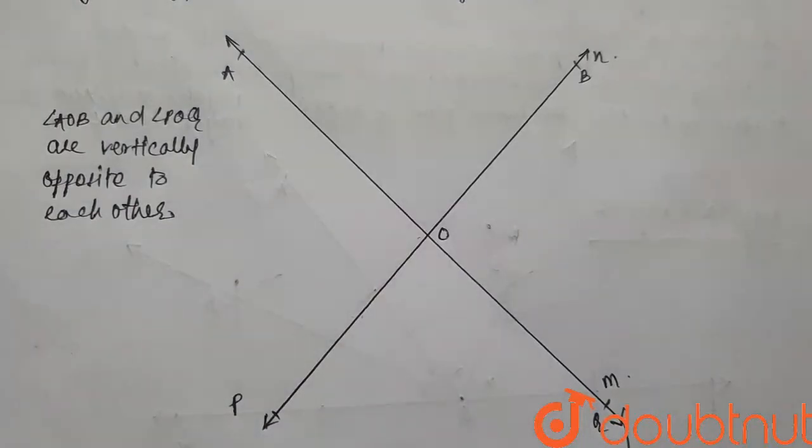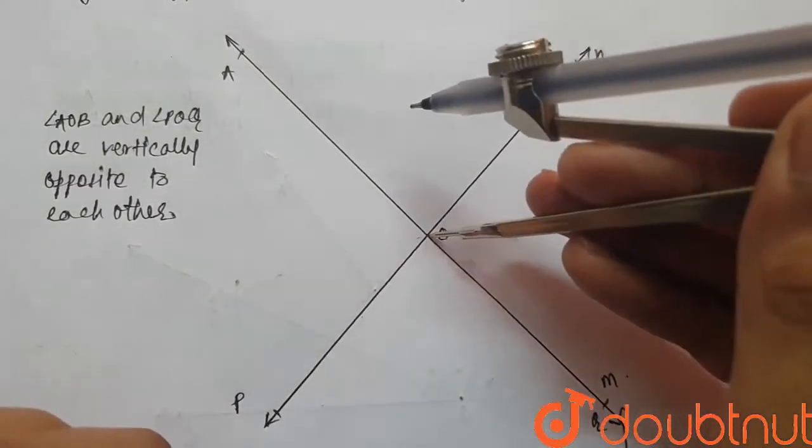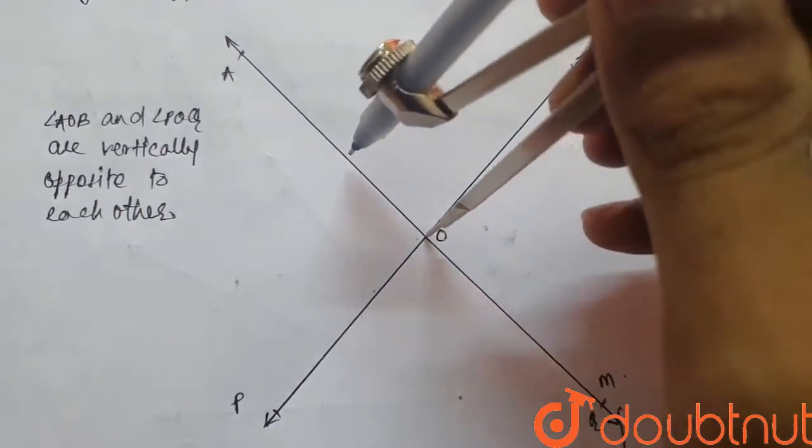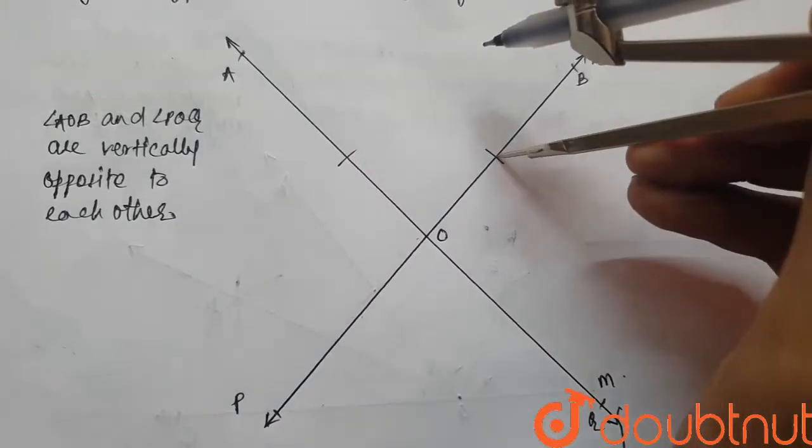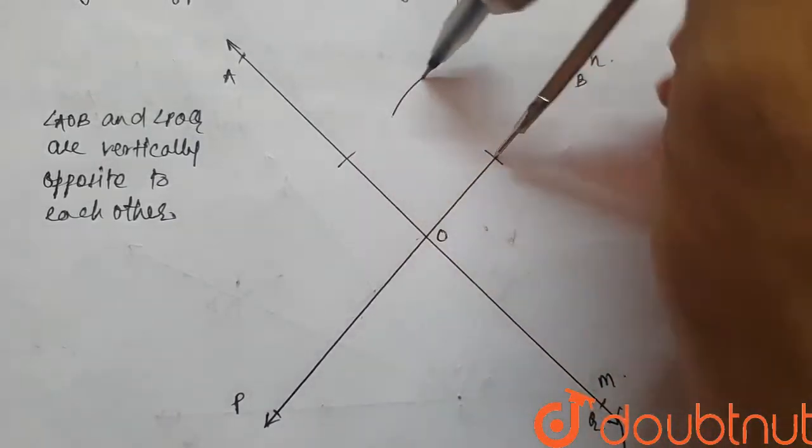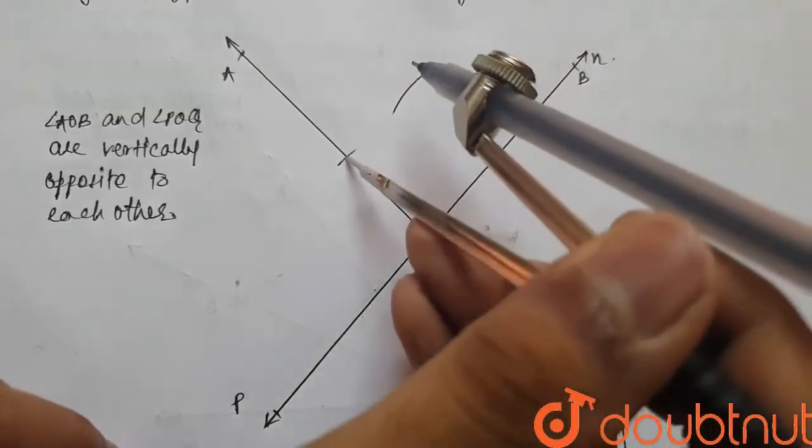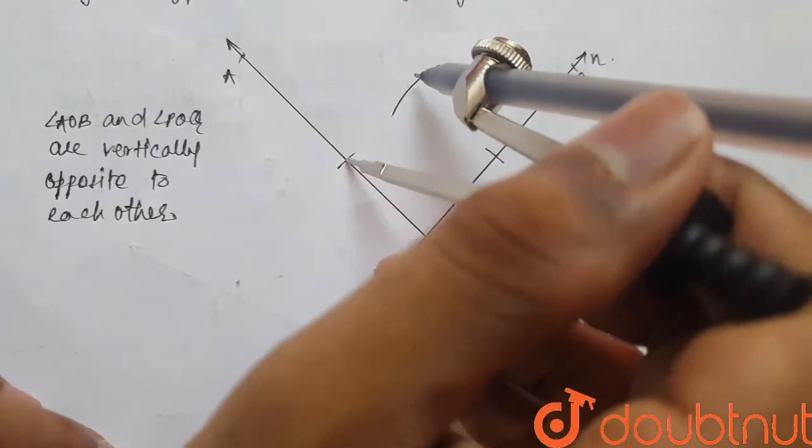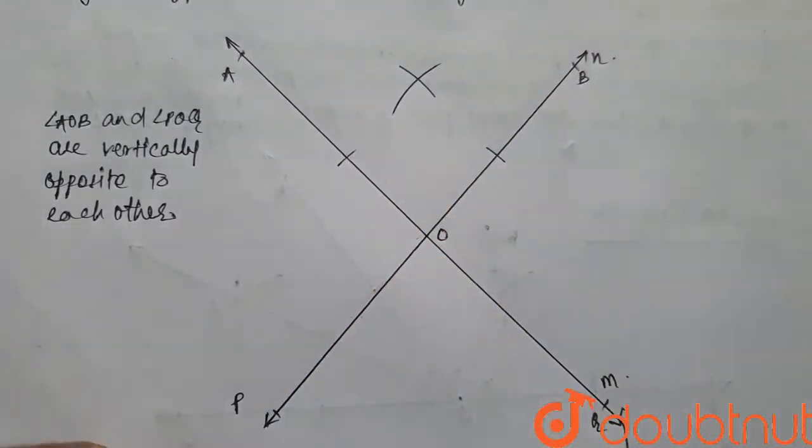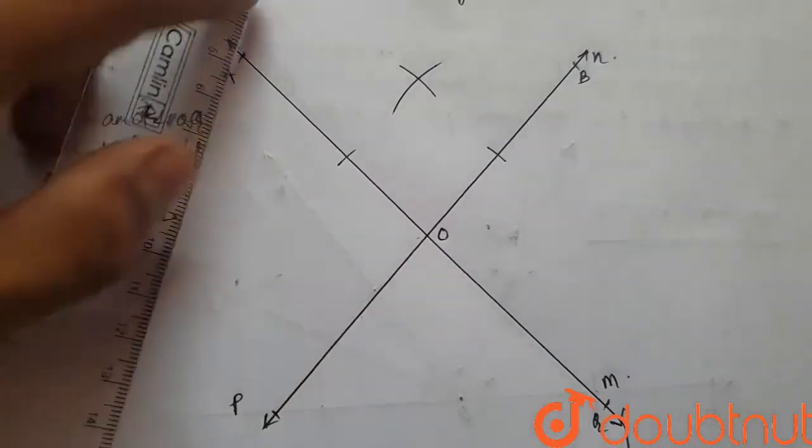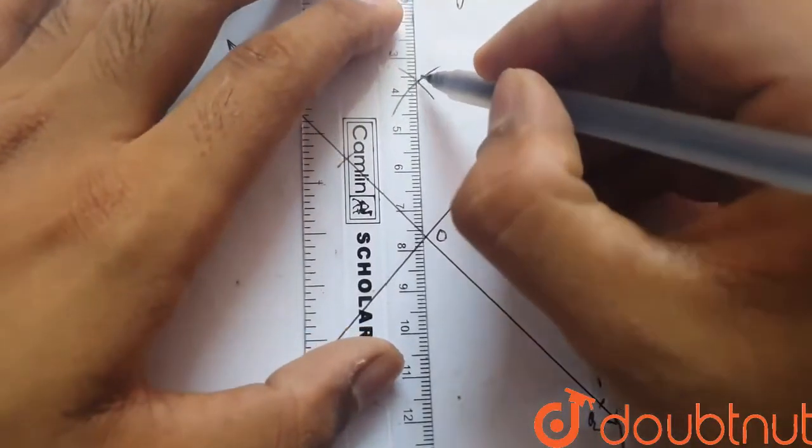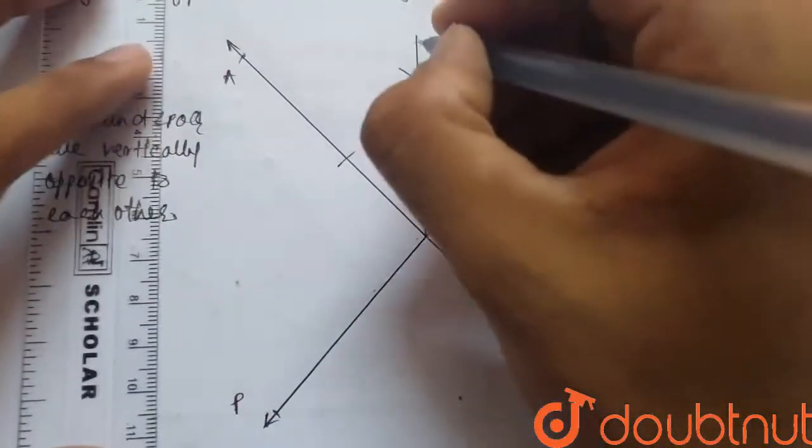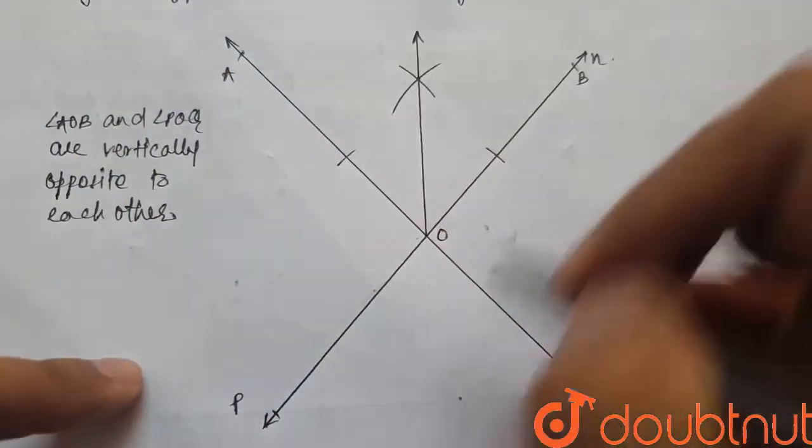Then, as it is asked in the question, we have to bisect both of these angles. So we start with angle AOB. We take a compass, take a random distance on the compass and make two arcs on both of these sides. And then keeping the compass on one of the arcs and keeping the distance same, we make an arc and then we repeat the procedure with the other arc. So we have one point of intersection of these two arcs and then we have our point O. So we join them to get our angle bisector of angle AOB.